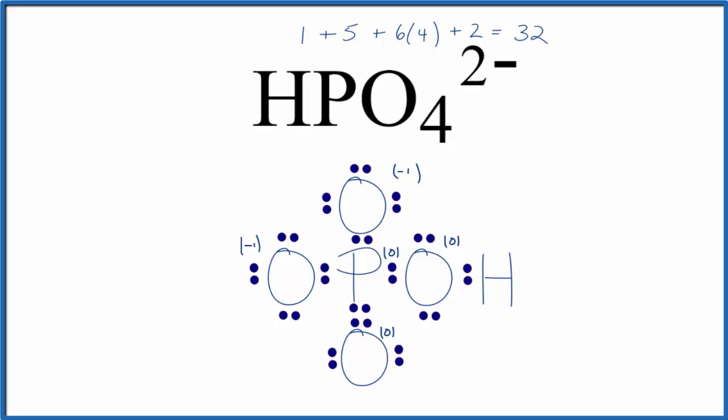For help with calculating formal charges, see the description for this video, there's a link to a video I did on formal charges. That's it, this is the most likely Lewis structure for HPO4 2-. One last thing, we should probably put brackets around it and put a two minus outside of those brackets. Okay now we're done.